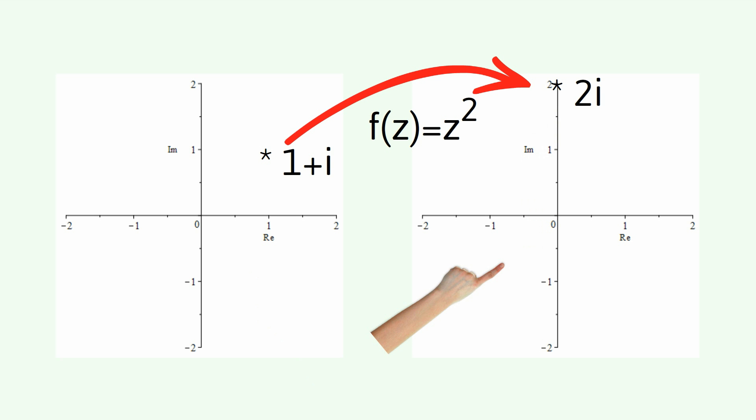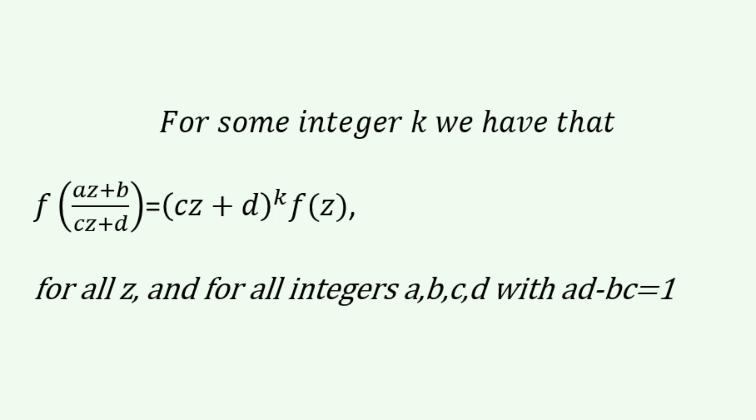Now, for modular forms, for reasons I won't go into now, we just use the top half of the complex plane. And modular forms are functions that have this property that for some integer k, we have that f of az plus b divided by cz plus d is equal to cz plus d all to the k times f(z). This is for all z and for all integers a, b, c, d with ad minus bc equals 1.